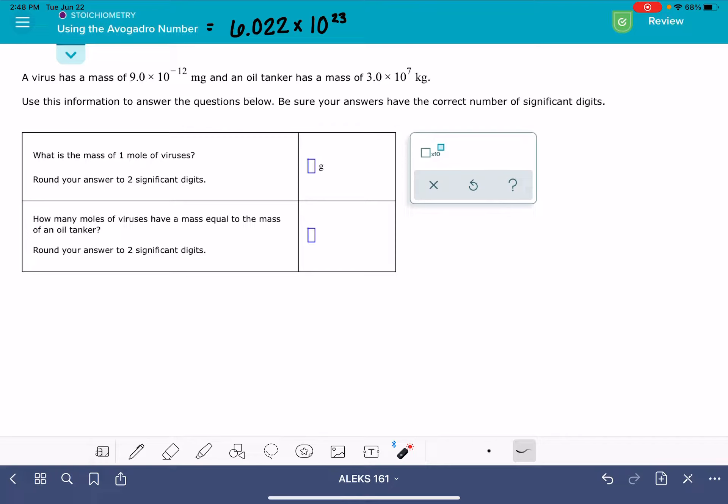So the first question is asking us to calculate the mass of one mole of viruses. The problem gives us the mass of a single virus. So this is telling us a virus has a mass of 9 times 10 to the minus 12 milligrams. We need to figure out what the mass is for a whole entire mole of viruses.